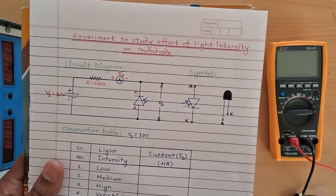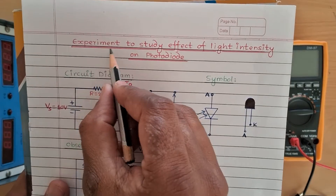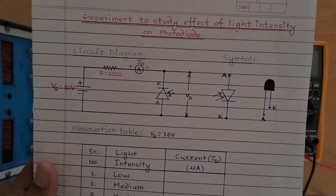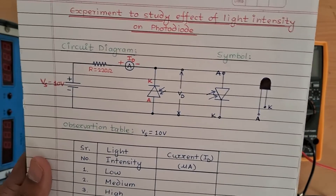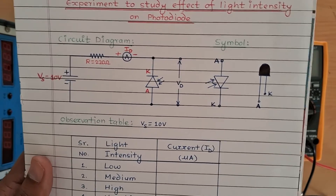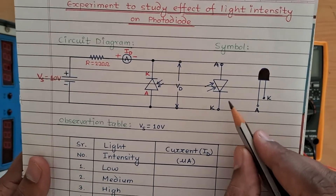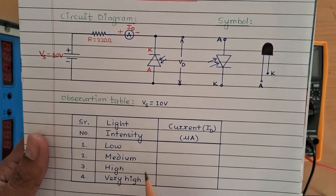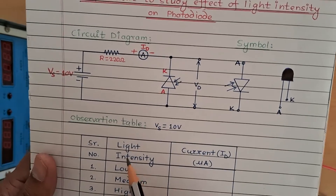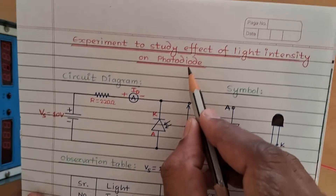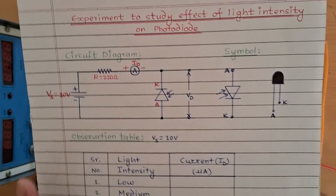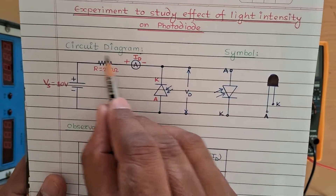Hello friends and welcome. Today we will see the experiment to study the effect of light intensity on a photodiode. In this experiment we will study what a photodiode is, we will see the circuit diagram for the photodiode, we will see the symbol of the photodiode, and finally we will take some readings to understand the effect of light intensity on a photodiode.